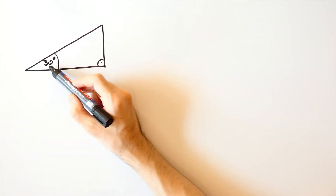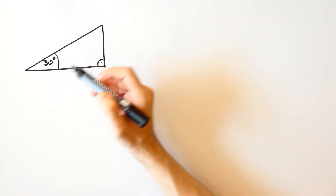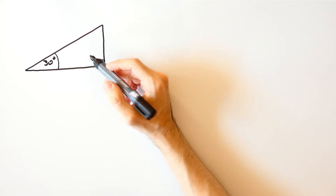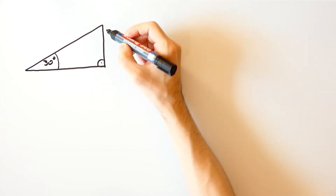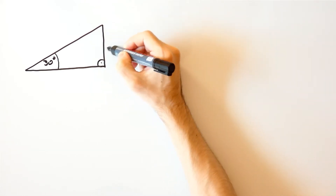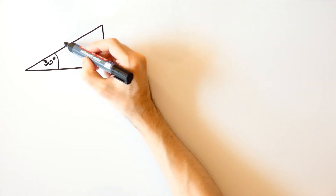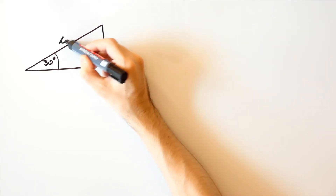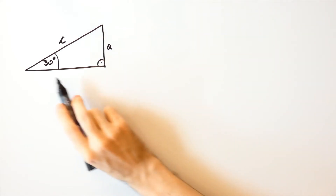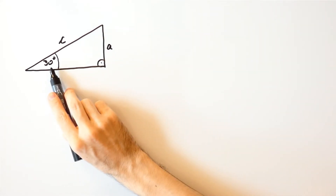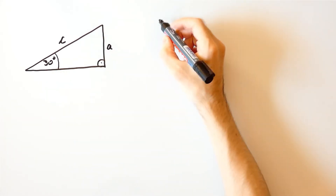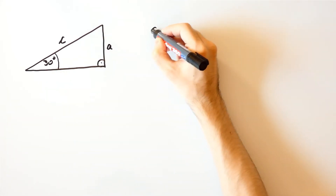Let's now see what are the sine and the cosine of 30 degrees. If we denote the opposite leg by a and the hypotenuse by c, then the sine of 30 degrees is equal to a over c.